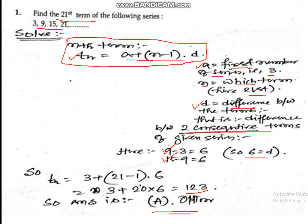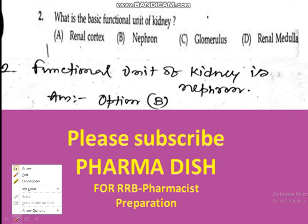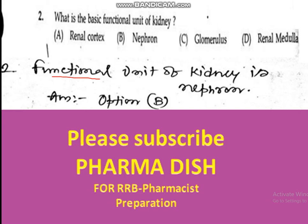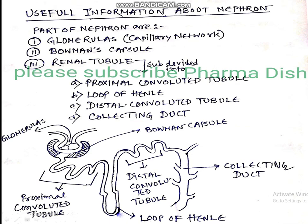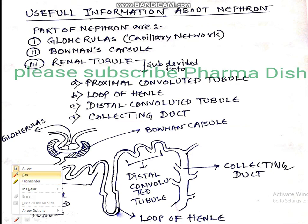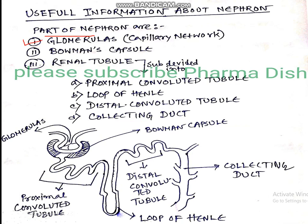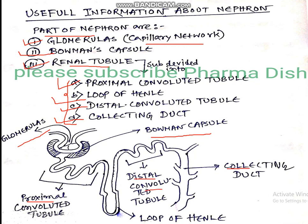The second question asks: which is the functional unit of the kidney? The answer is option B — the nephron. Key information about the nephron: its parts are the glomerulus (a capillary network), Bowman's capsule, and the renal tubule. The renal tubule is further subdivided into the proximal convoluted tubule, loop of Henle, distal convoluted tubule, and collecting duct. The glomerulus and proximal/distal convoluted tubules with the loop of Henle in between form the complete nephron.